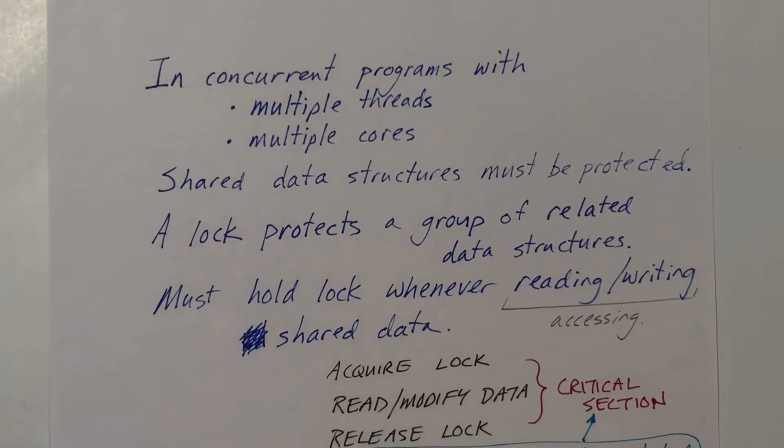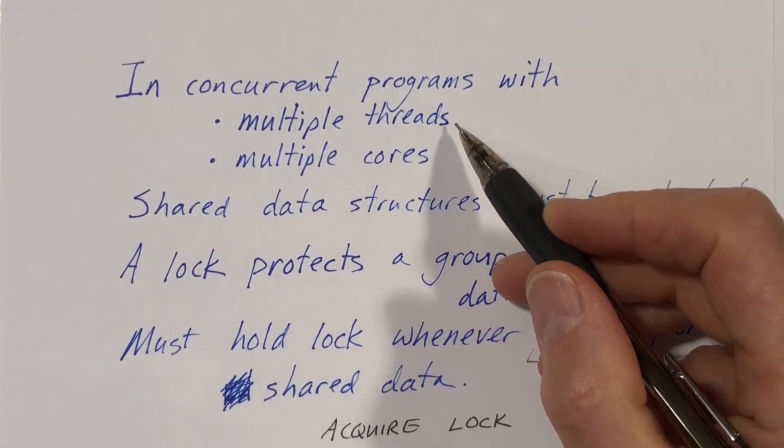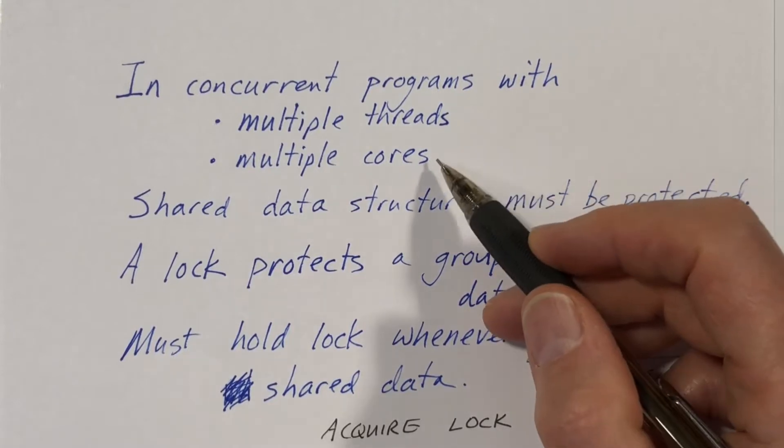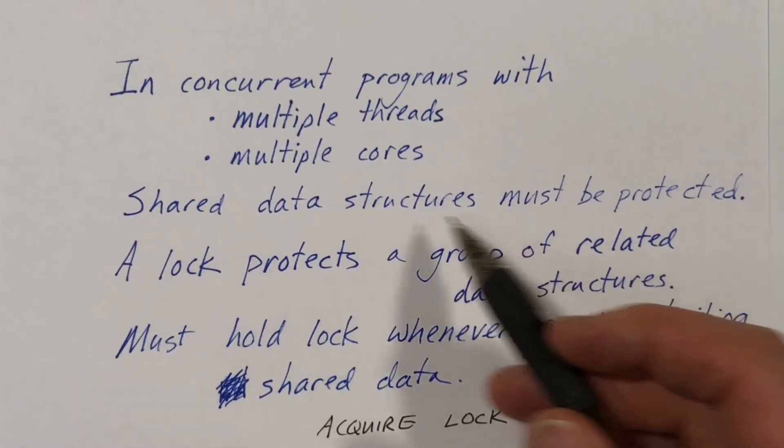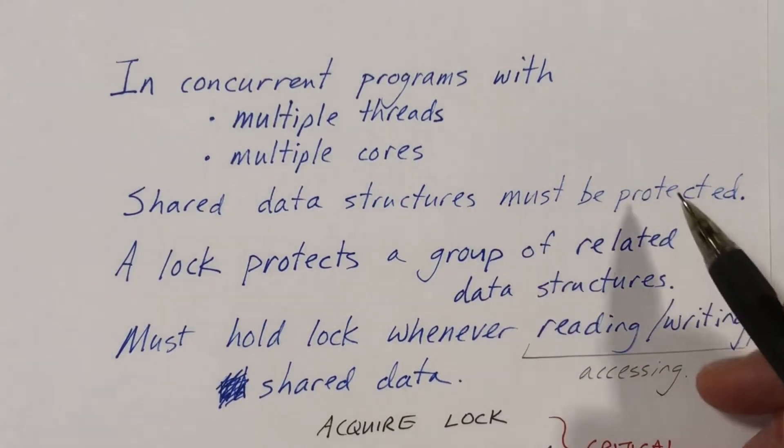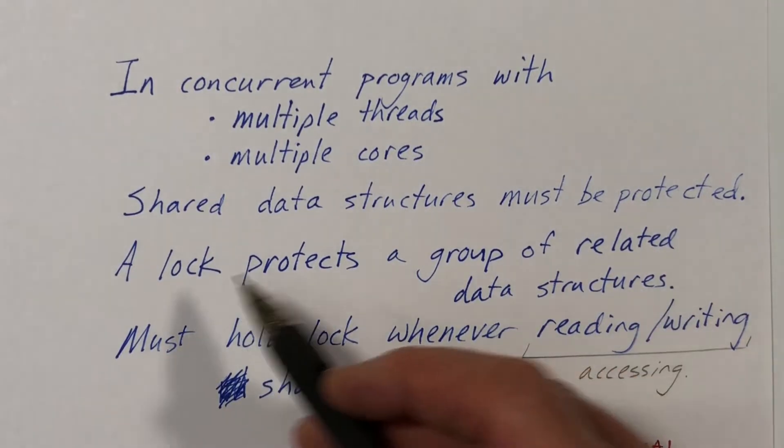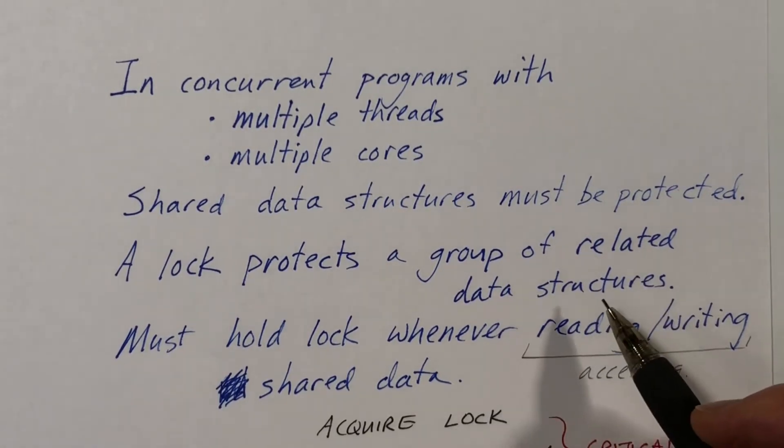Let's remember what locks are all about. In any concurrent program, we have multiple threads, and those threads could be executing on the same core as a result of time slicing, or we could have multiple cores and each core is executing a separate thread of control. In any case, we have data structures that are shared between the different threads, and they must be properly protected, and we use locks to protect the shared data. So every lock protects a group of related data structures, and every data structure that is accessed by more than one thread, where it's being used concurrently, needs to be protected by some lock.